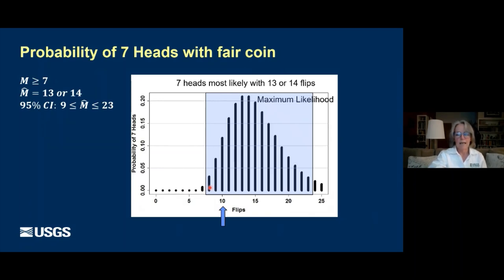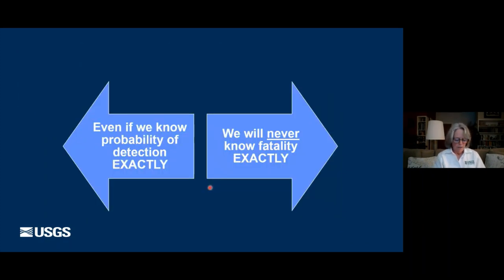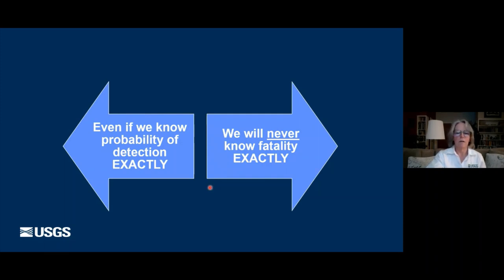The point here is that even if we know the probability of detection exactly, we will never know fatality exactly — unless the detection probability is very close to one. If it is, then our estimate will be a lot closer to actual fatality. But most of the time when we're dealing with this, we don't have a detection probability close to one.